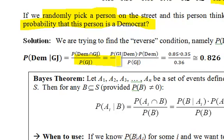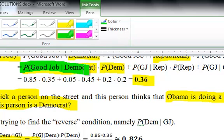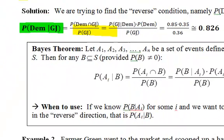So, I'm asking probability Democrat, given good job. And above, what we had was probability good job given Democrat. And now, I've reversed the conditional to probability Democrat, given good job.